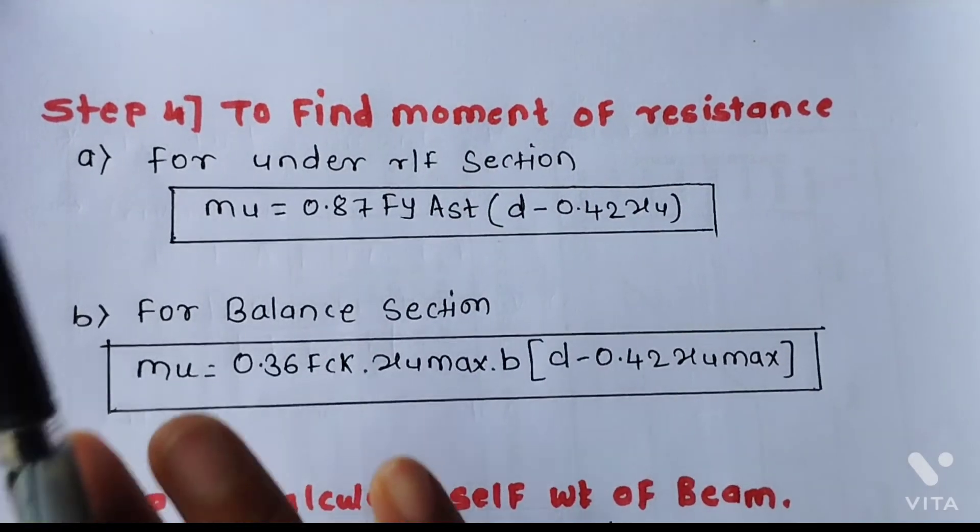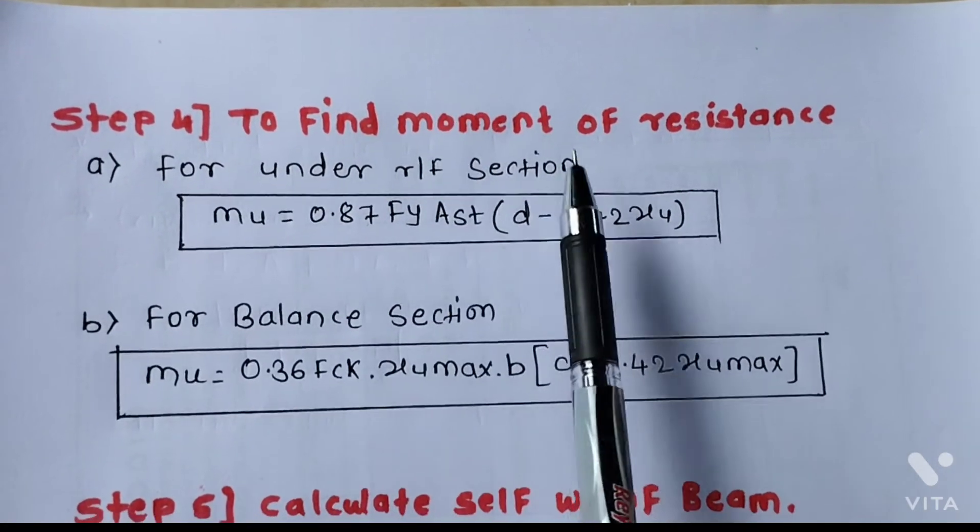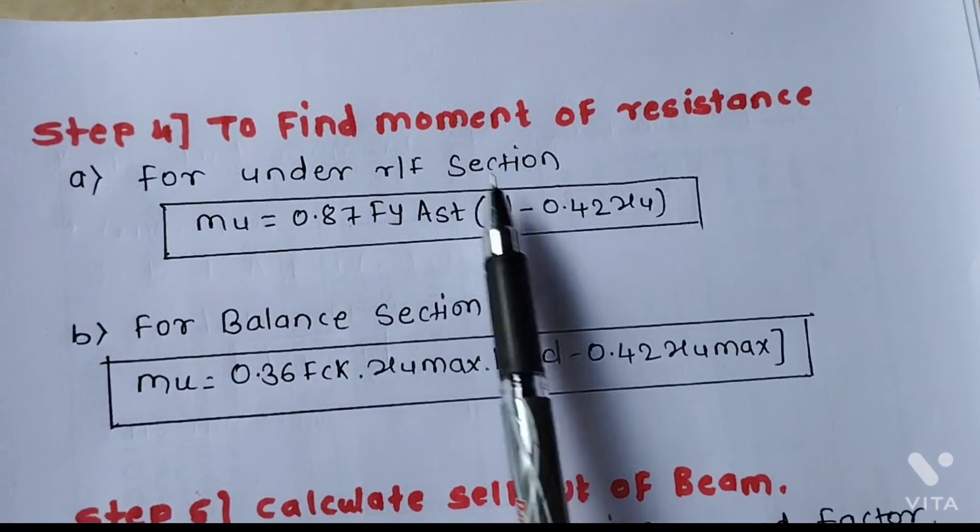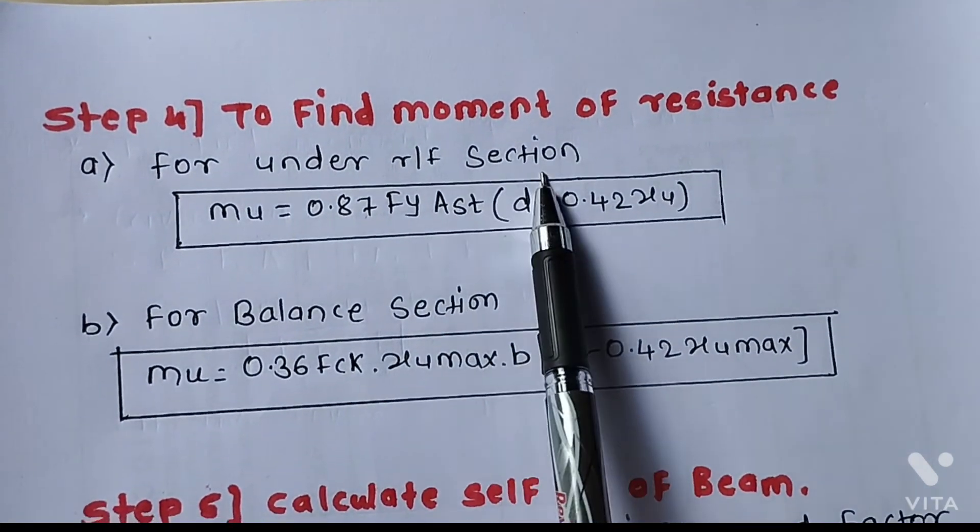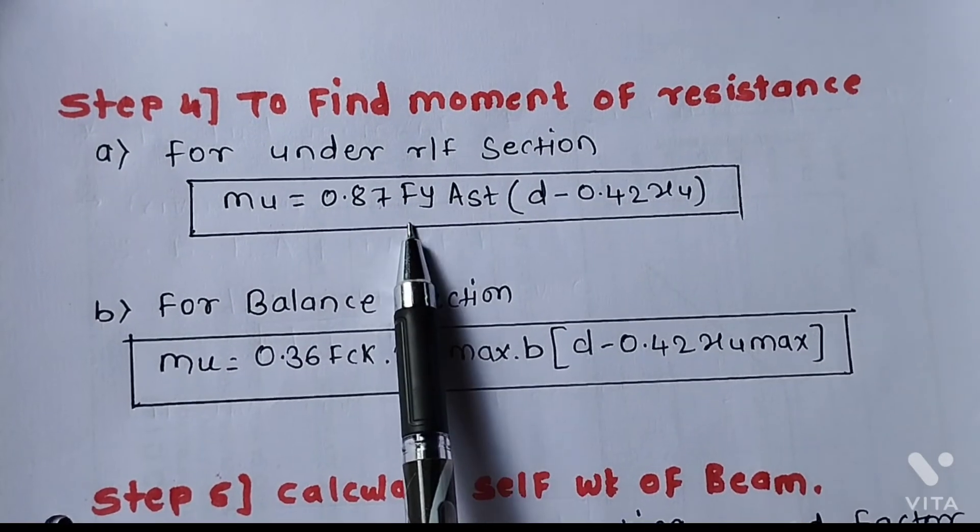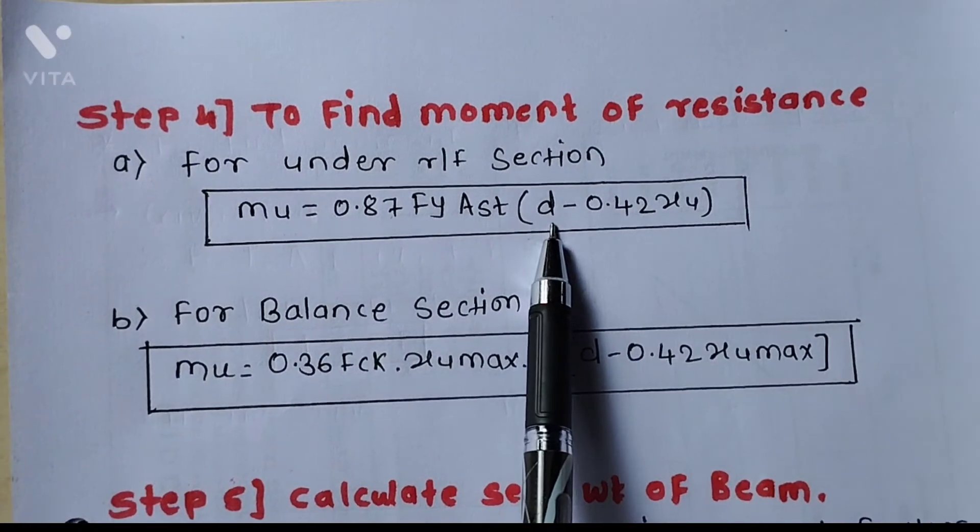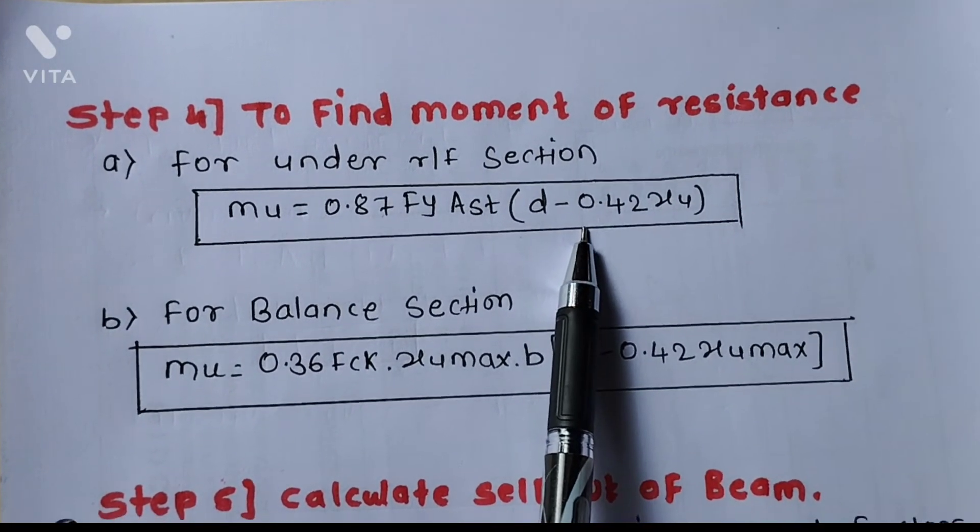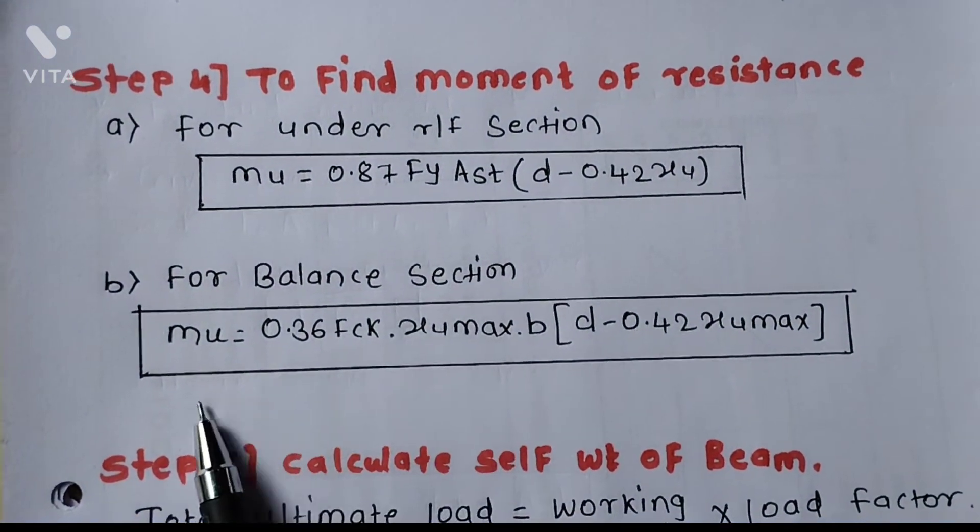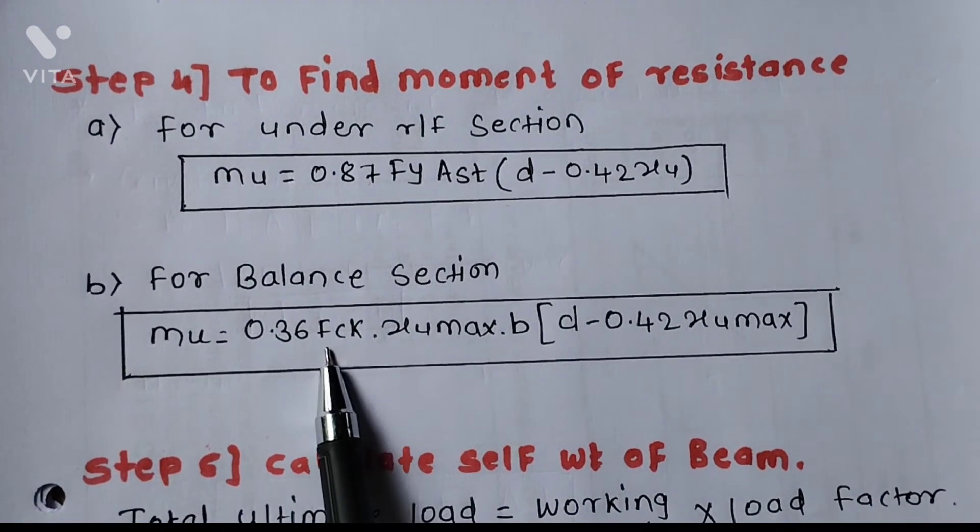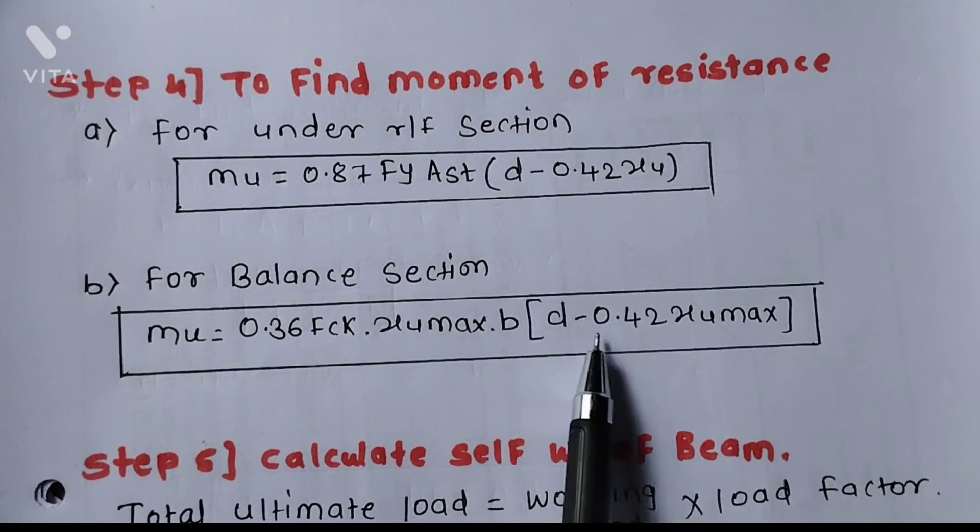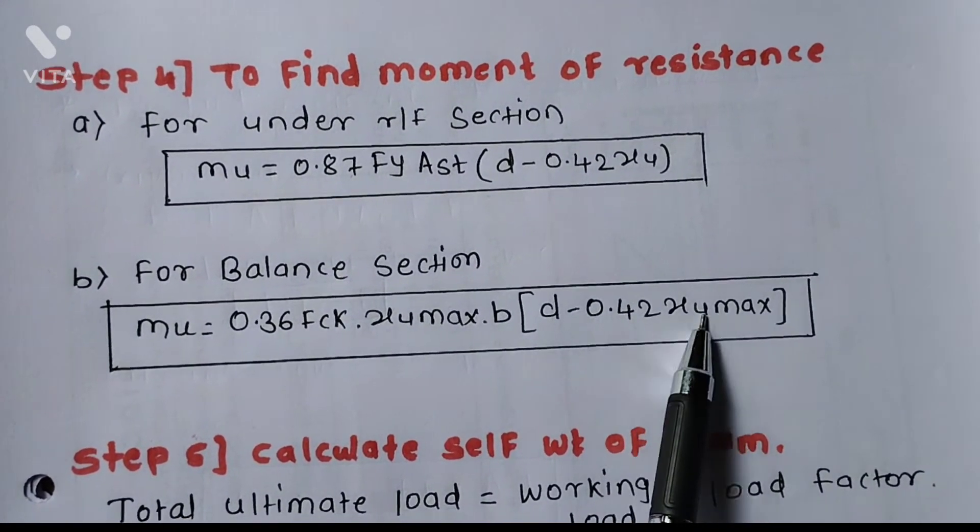After above three steps, Step 4: To find the moment of resistance. For the under-reinforced section, the formula is mu equals 0.87 fy Ast into bracket d minus 0.42 xu. For the balanced section, mu equals 0.36 fck into xumax b in bracket d minus 0.42 xumax.